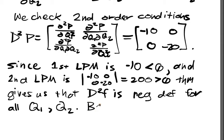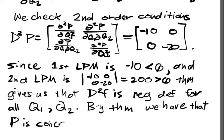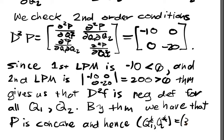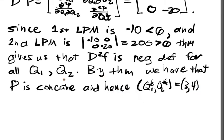...by the theorem that we saw in the third video, we have that this function is going to be concave, so P is concave, and hence (Q1*, Q2*) = (3, 4) is a global max.